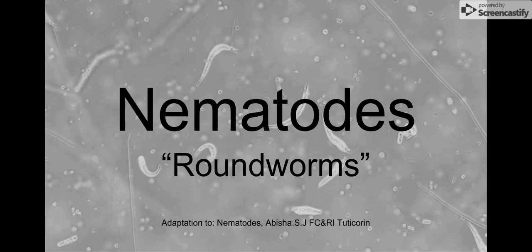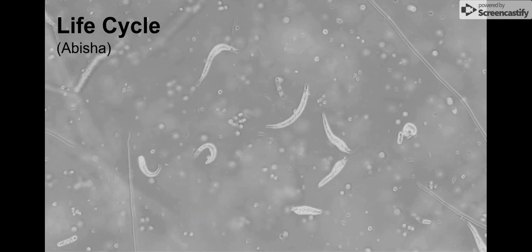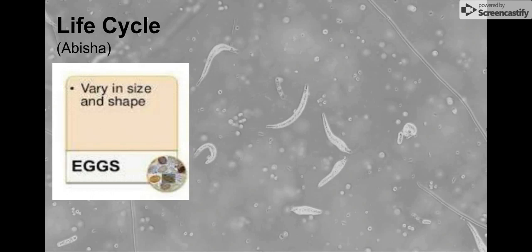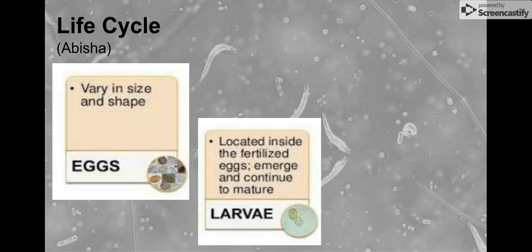Today is very short — we are discussing the life cycle. A nematode starts its long little life out as an egg, which may come in a variety of shapes and sizes. Then it develops into a larva, which is located inside of the egg we just discussed.